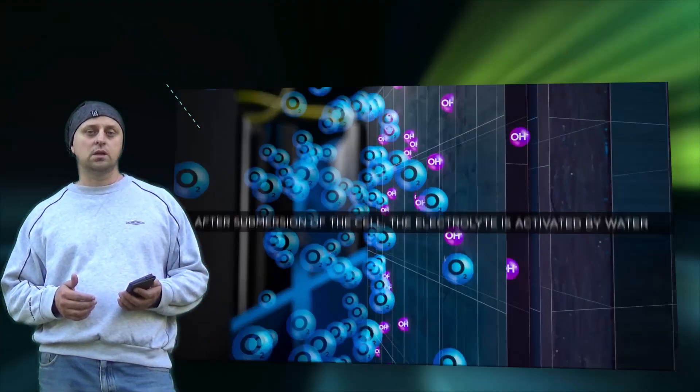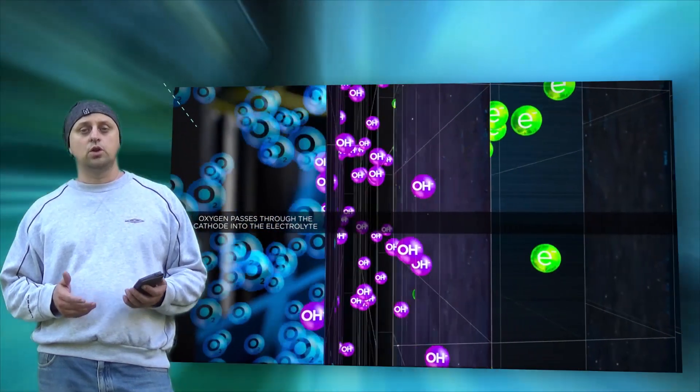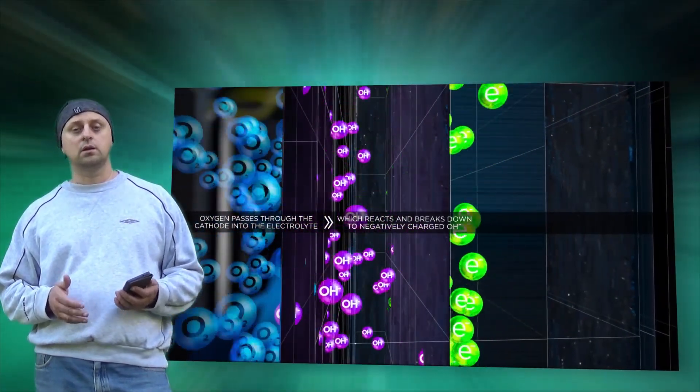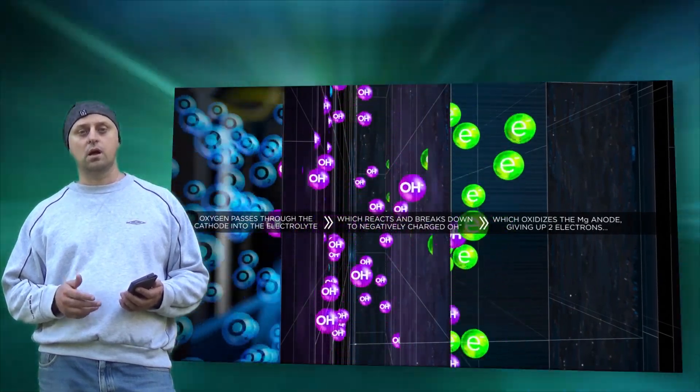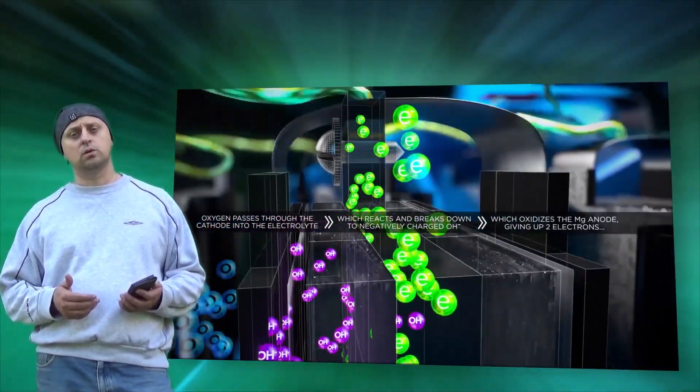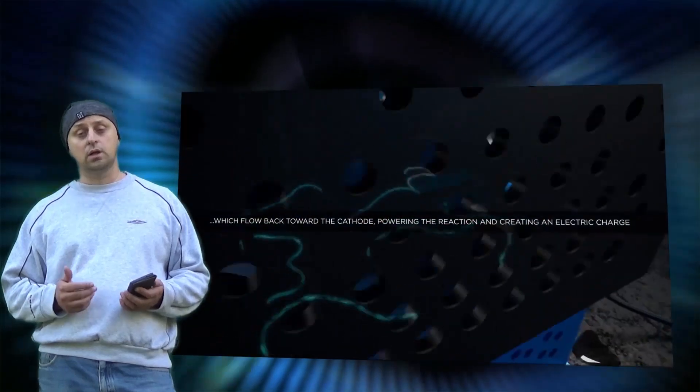The HydraCell generates electricity by activating a chemical reaction between magnesium and oxygen. This triggers the release of electrons that travel back to the carbon cathode collector and generate electricity that can be output via USB.